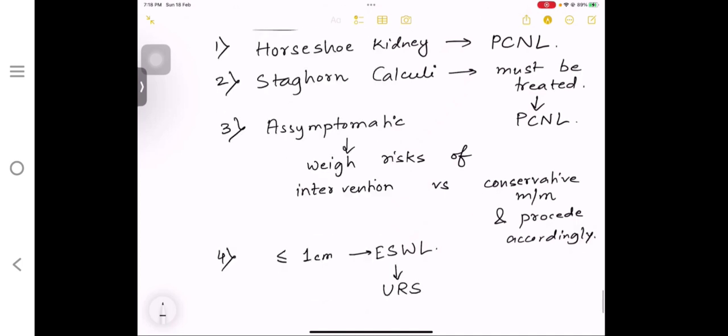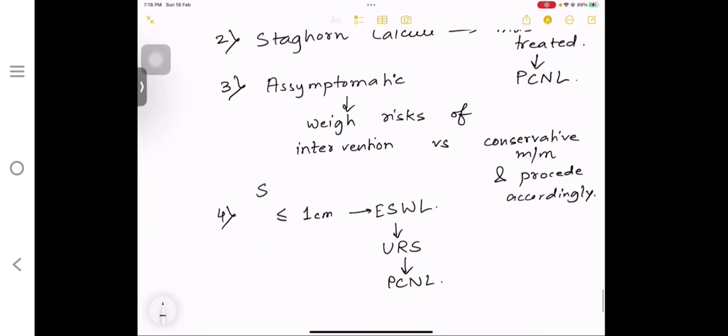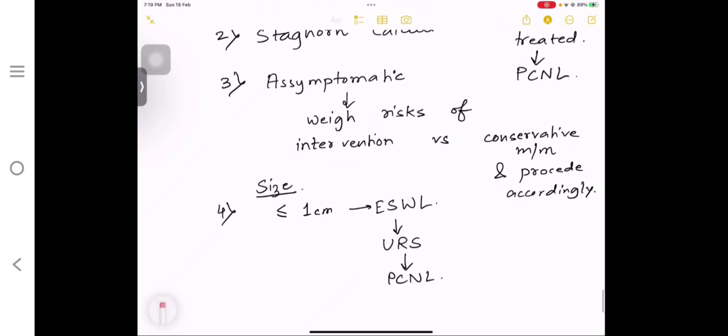If a stone size is 1 to 2 cm, then you either go for URS, ESWL, and then PCNL. If the size is more than 2 cm, then URS and ESWL will not do the work because it has preliminary steps. You have to go for PCNL. With a big problem, you go for PCNL.